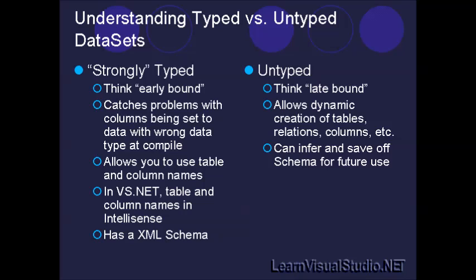Strongly typed data sets also have an XML schema. If you have a strongly typed data set, you're going to have an XSD file somewhere in your project that holds the structure or metadata about what that data table will look like. Another benefit of strongly typed data sets, especially in C#, is that they'll catch problems with columns being set to data with the wrong data type at compile time. So if you have a column that can only have integer values, with an untyped data set it would allow you to set that equal to a string, but with a strongly typed data set it would throw an error before you even got to that point.